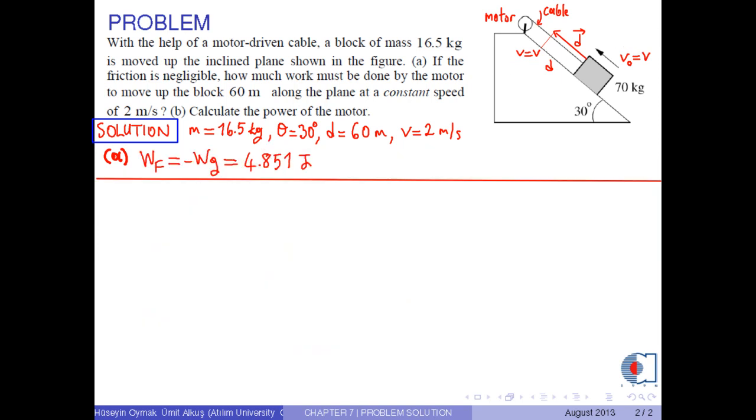Now, we calculate the power of the motor using the formula Pm equals Wf over t. Since the speed of the block is constant, we use the formula t equals d over v to find the time.